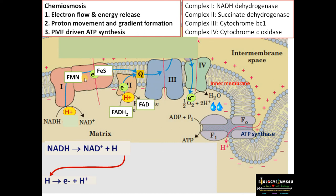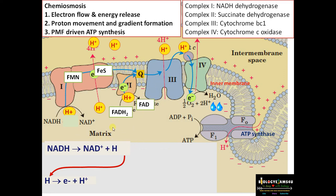High energy electrons donated by NADH and FADH2 result in energy release as electrons move through different electron carriers from a high energy to low energy state. This energy is used to pump protons from the matrix side to the intermembrane space side.